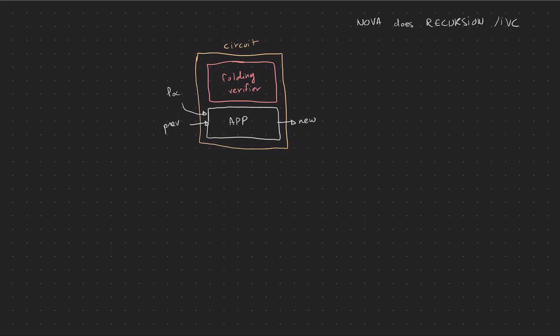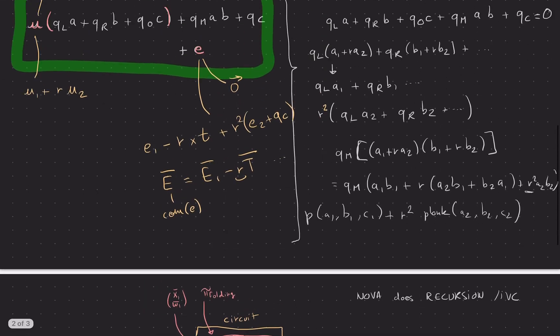The folding verifier is going to do the folding thing we just talked about. It's going to take some instance witness, two instance witness, and actually these are the public parts not the prover parts because the prover did the work for us.